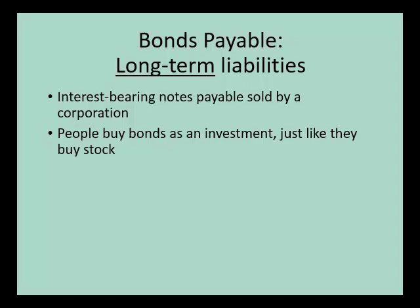Now let's talk about a new type of liability discussed in Chapter 10: bonds payable. Bonds payable are a long-term liability — they are interest-bearing notes payable sold by a corporation. Anyone can buy a bond as an investment, just like they buy stock, except when they're buying a bond, they're buying a notes payable, so they're lending money to the corporation, and the corporation promises to repay the principal amount borrowed plus interest.